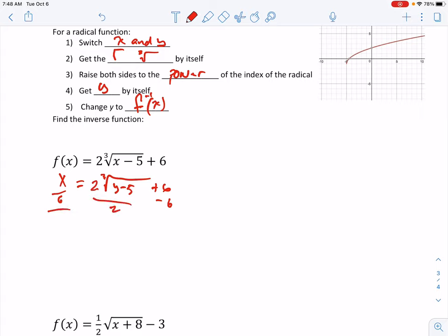Oh, I messed that up. All right, we are going to subtract 6 and then divide by 2. So let's see, we have this cube root of y minus 5 is equal to x, take away 6, divided by 2.